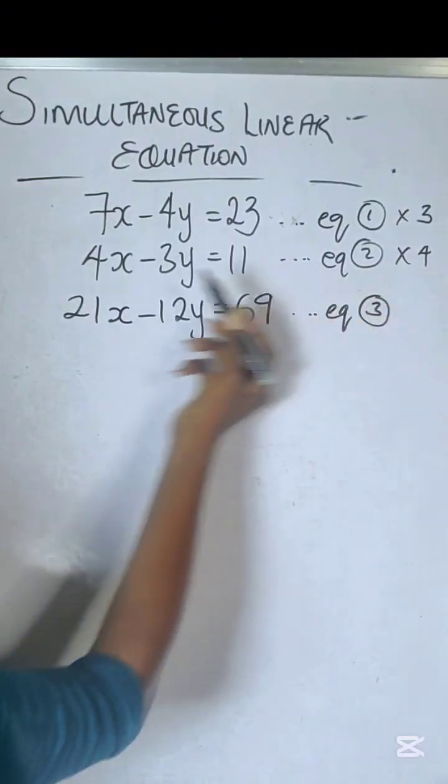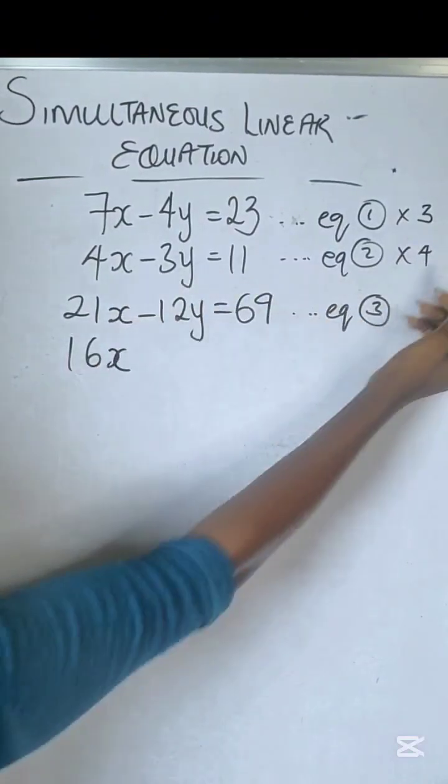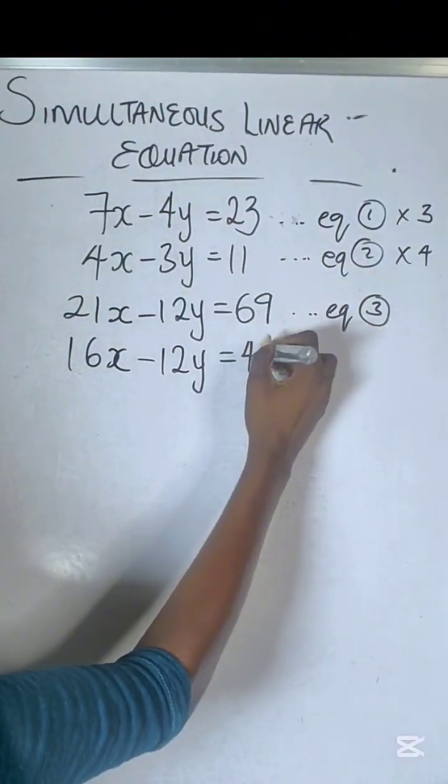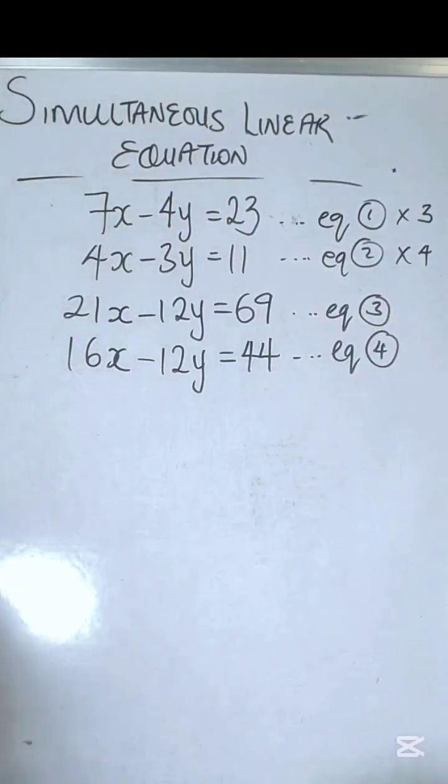Then do the same for the second equation: 4 times 4 is 16x, 4 times -3 is -12y, 4 times 11 is 44. This becomes equation 4. Always label your equations.